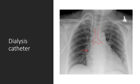If you cannot see the cavoatrial junction, you can find the carina and count two vertebral bodies below that to approximate its level. Practically anywhere within the SVC would be appropriate. Sometimes you see catheters extending into the right atrium — that's not ideal because it can cause arrhythmias.